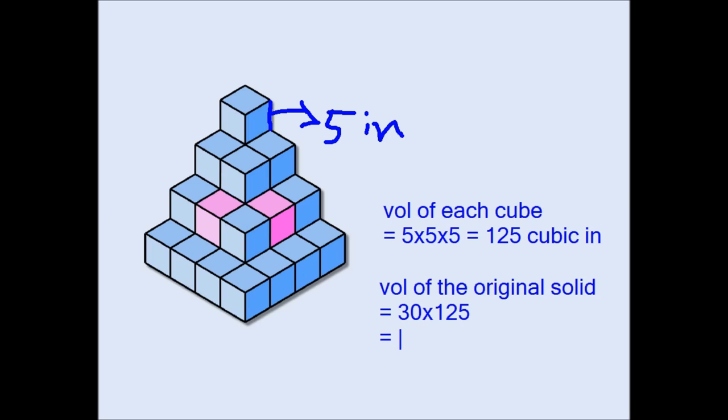So this has to be—we're going to find out what it is—and 125 times 30 is 3750 cubic inch. That's my answer.